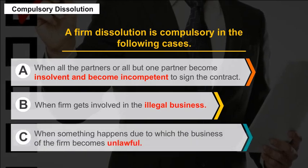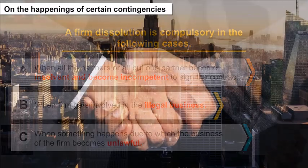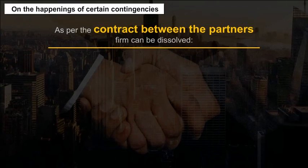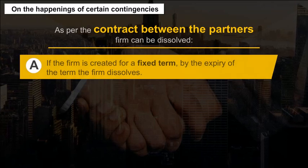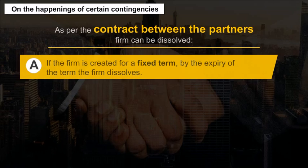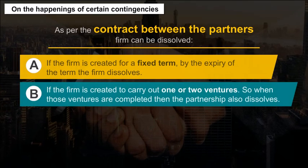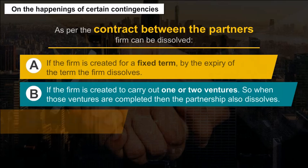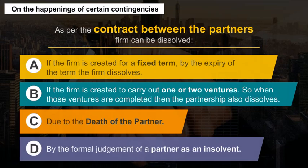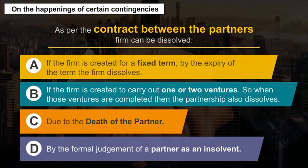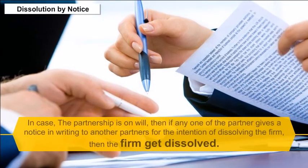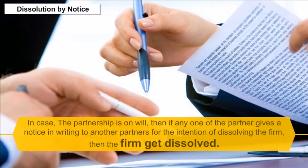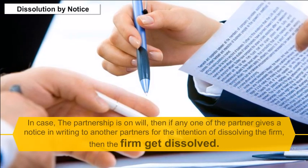Compulsory dissolution also occurs (C) when something happens due to which the business of the firm becomes unlawful. On the happening of certain contingencies, as per the contract between the partners, a firm can be dissolved: (A) if the firm is created for a fixed term, by the expiry of the term the firm dissolves; (B) if the firm is created to carry out one or more ventures, when those ventures are completed the partnership dissolves; (C) due to the death of the partner; (D) by the formal judgment of a partner as insolvent. In case the partnership is at will, if any one partner gives a notice in writing to another partner of the intention of dissolving the firm, then the firm gets dissolved.